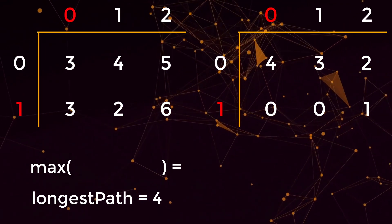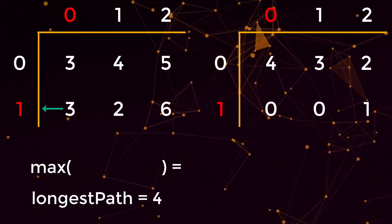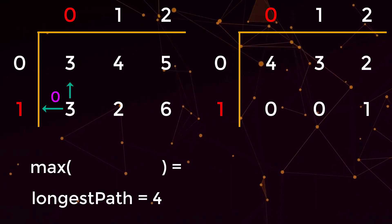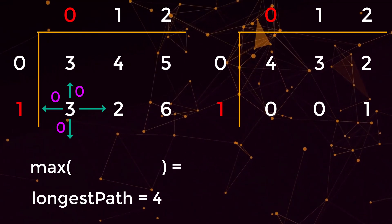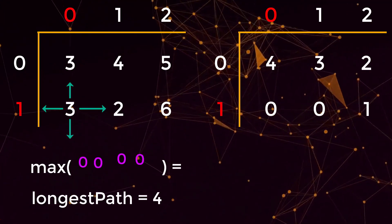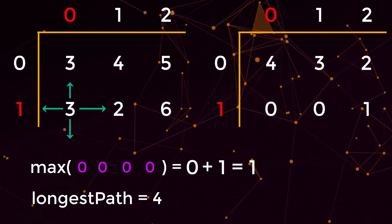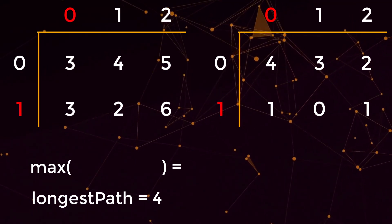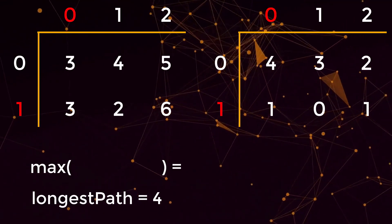At position (1,0), the cache value is zero so we must visit it. Left — out of bounds. Up — three equals three, not strictly greater, return zero. Down — out of bounds. Right — two is less than three, return zero. The max of all directions is zero, plus one for the current position gives one. We update the cache at (1,0) to one. One is not greater than our longest path of four, so we do nothing.